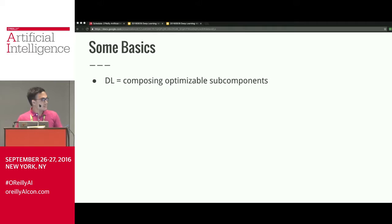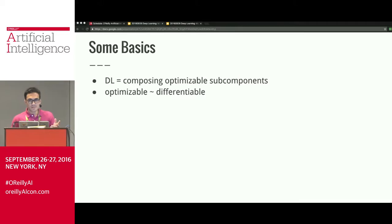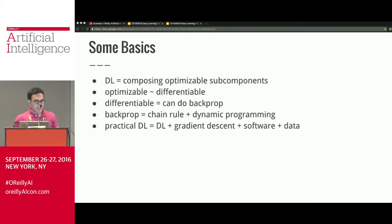I didn't mention math but I lied — there's going to be a teensy bit of math, but really basic math. To me, deep learning means composing optimizable subcomponents — not necessarily neural networks and matrix multiplications. Optimizable roughly means differentiable for most purposes. Differentiable means you can do backprop on the computation graph. Backprop is just the chain rule combined with dynamic programming. Practical deep learning is this combined with gradient descent, software, and data.